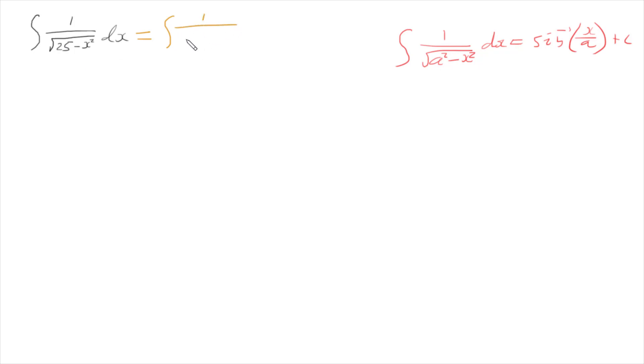So I can rewrite my integral as 1 over the square root of 5 squared minus x squared with respect to x.